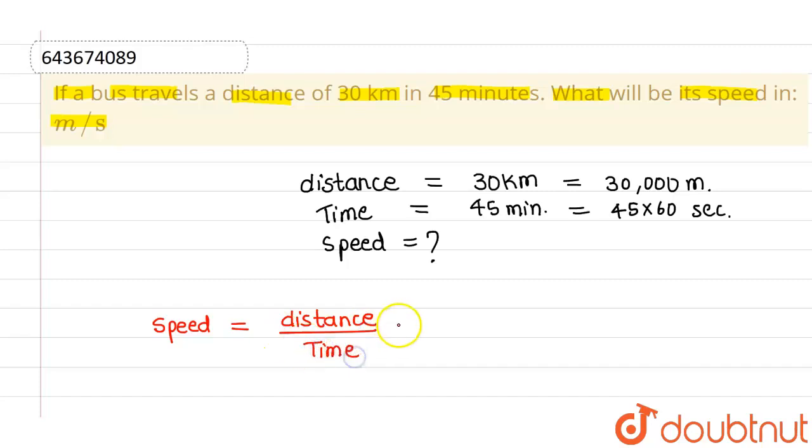Now, if I try to put distance, distance is given as 30,000 meters divided by time is 45 into 60. So this will cancel out with 1000 and this will cancel out with 2. So this will be 1000 divided by 90, which can be written as 100 by 9 km per second.